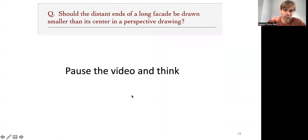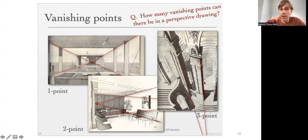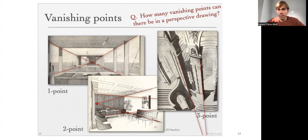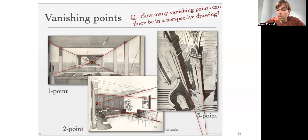The same can be said for other parallel lines. You have here one vanishing point, another vanishing point, and another vanishing point. A natural question is: how many vanishing points are there in a perspective drawing? The correct answer is as many as there are sets of parallel lines — there can be infinitely many vanishing points. Every pair of parallel lines not on the plane perpendicular to the line of sight will converge to a vanishing point.